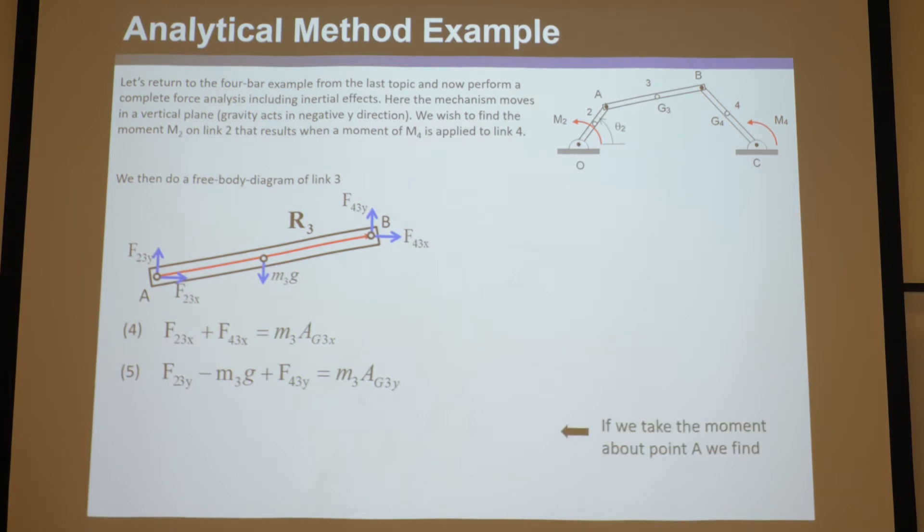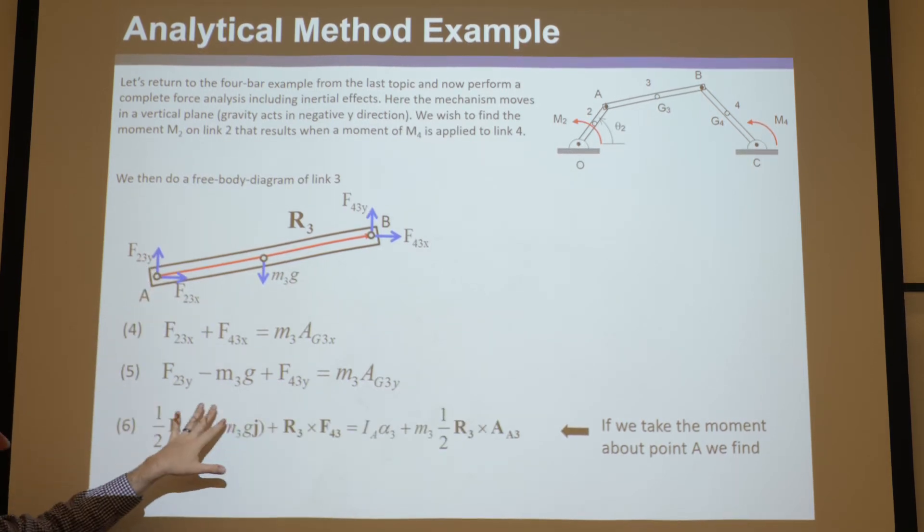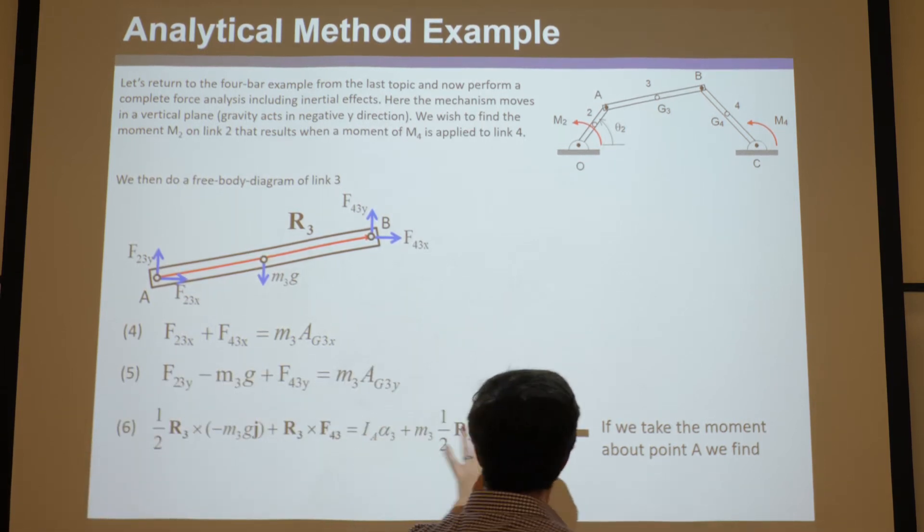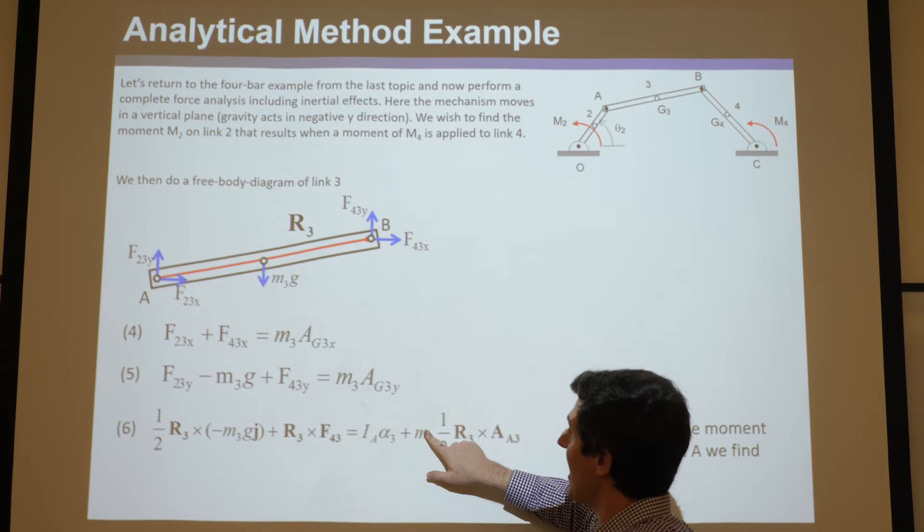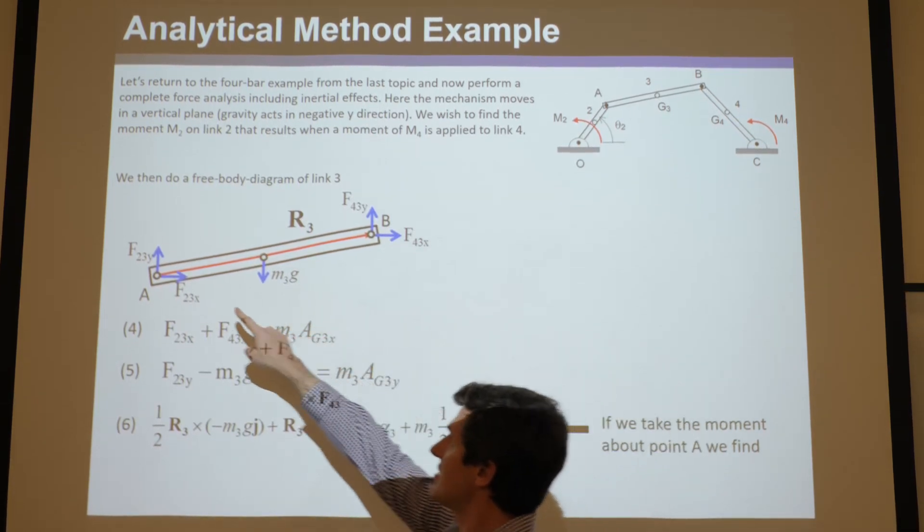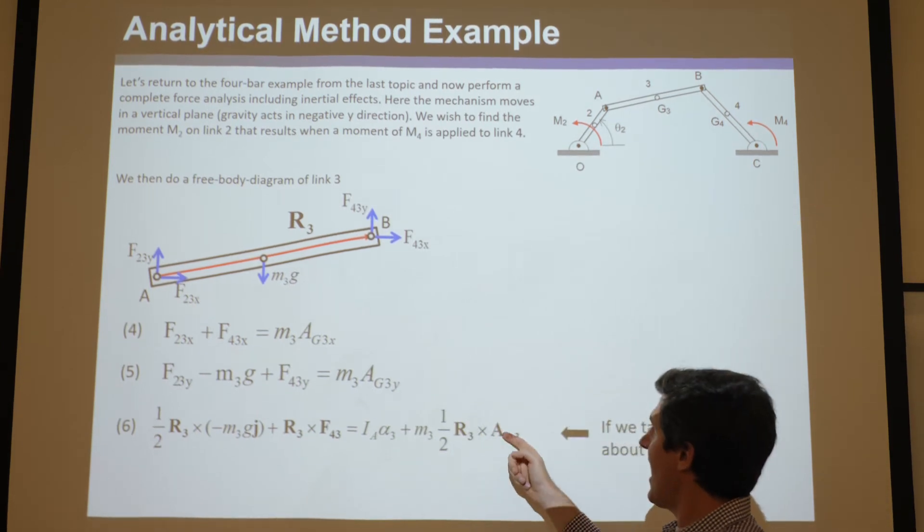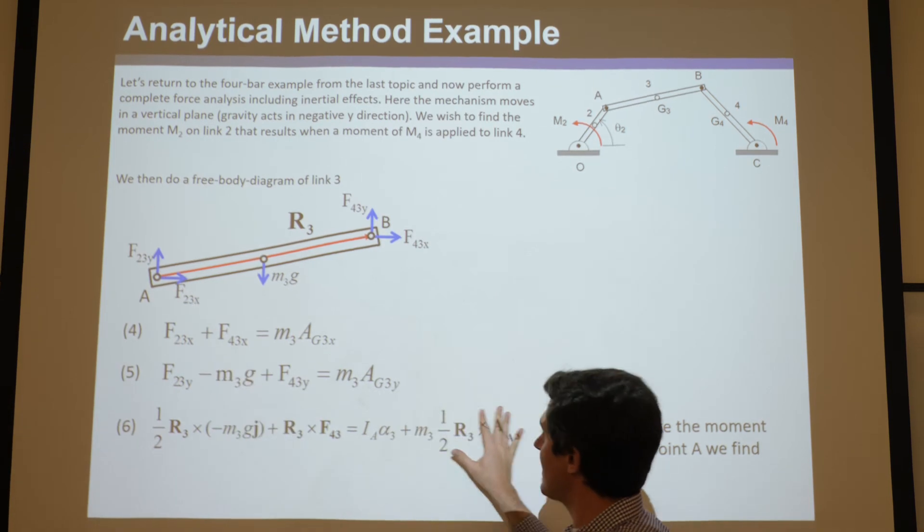We could again pick any point to do the torques or moments. We could pick A like we did last time, so the left side of the equation is all the same. But now, check it out, now we have to do all this ugly stuff, because we did Ia alpha plus m3, and it would have to be r from A to 3, because it's the vector from that point to the center of mass, cross the acceleration of a3, which now is not zero, so none of this could cancel.